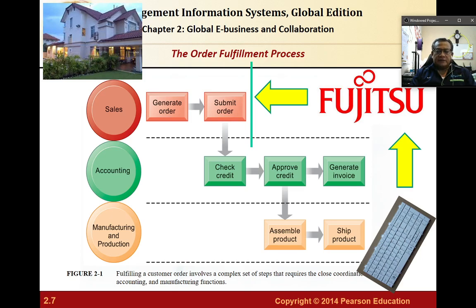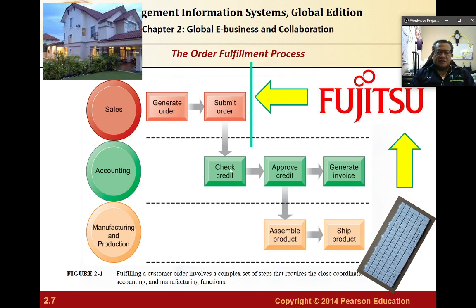Say Fujitsu Japan wants to order keyboards from Fujitsu Batu Pahat. First, Fujitsu Takamisawa Japan's sales department generates the order, which is sent via IT system to the accounting department. Accounting checks the credit status of both Fujitsu Japan and Fujitsu Malaysia — verifying there is no outstanding debt — and if the credit check is positive, the order credit is approved.